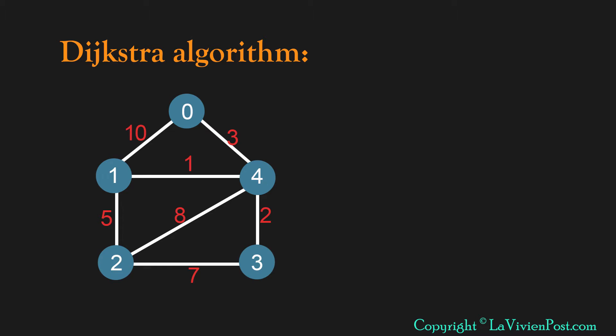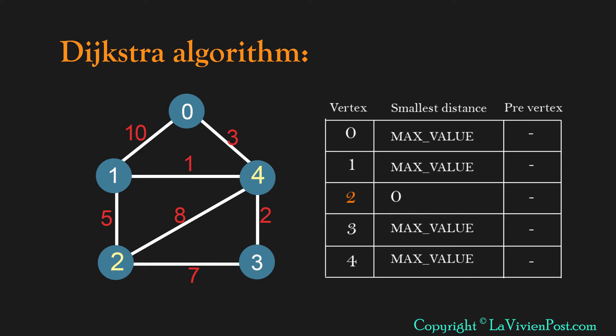In this graph we will find the shortest path from 2 to 4. Initially the distance table will look like this. The first column is all vertices in the graph. The second column is the smallest distance from vertex 2 to this vertex. The value is zero to itself. Others are max value at beginning.